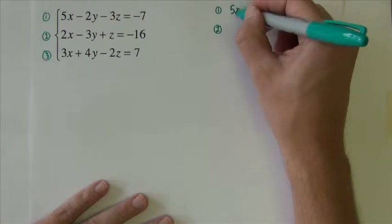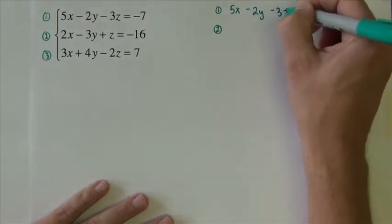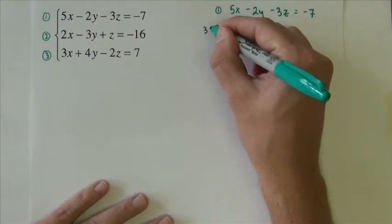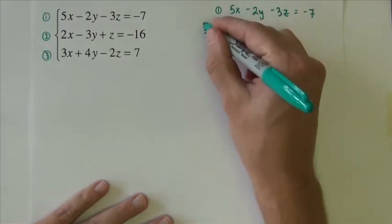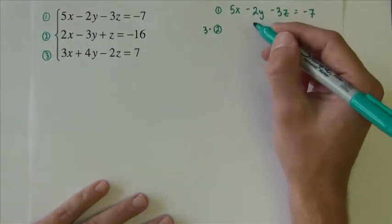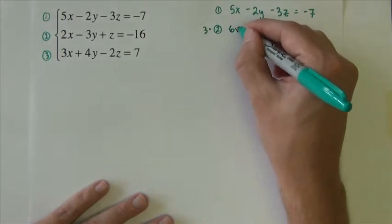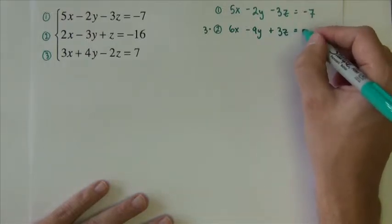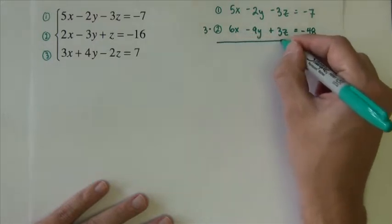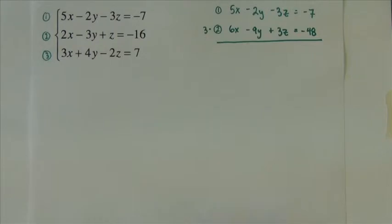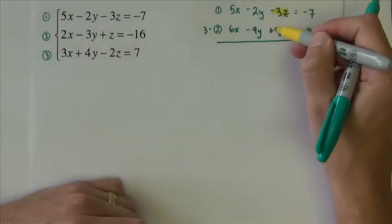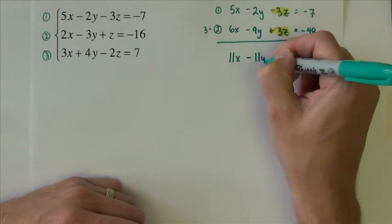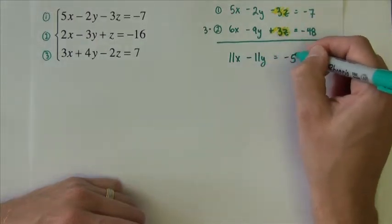So I'm going to take equation one and not change it at all. And I'm going to take equation two times three. Here I am trying to keep myself organized and showing myself exactly what I'm doing. So if I need to go back and check later, it'll be easy to do that. So equation two times three makes 6x minus 9y plus 3z equals negative 48. So now I'm going to add these two equations together.